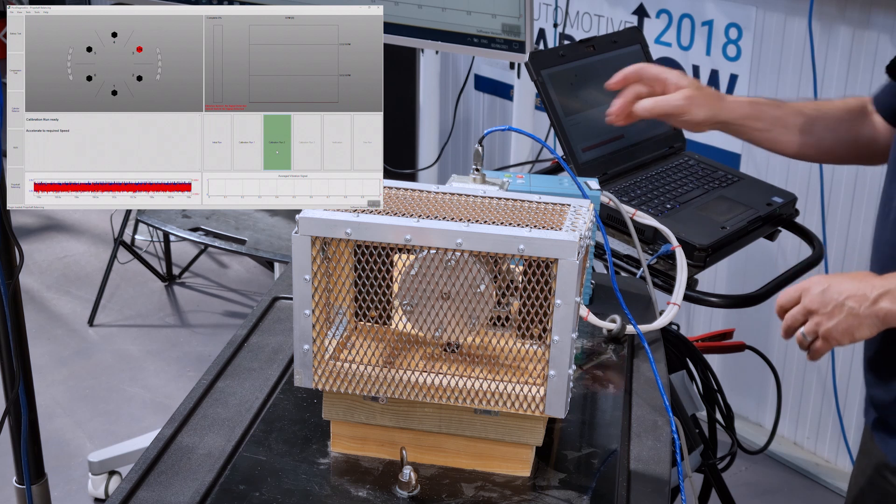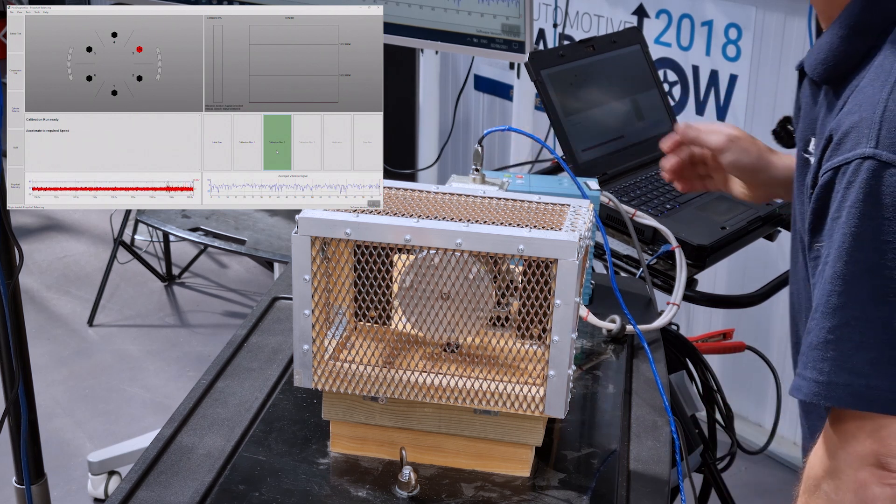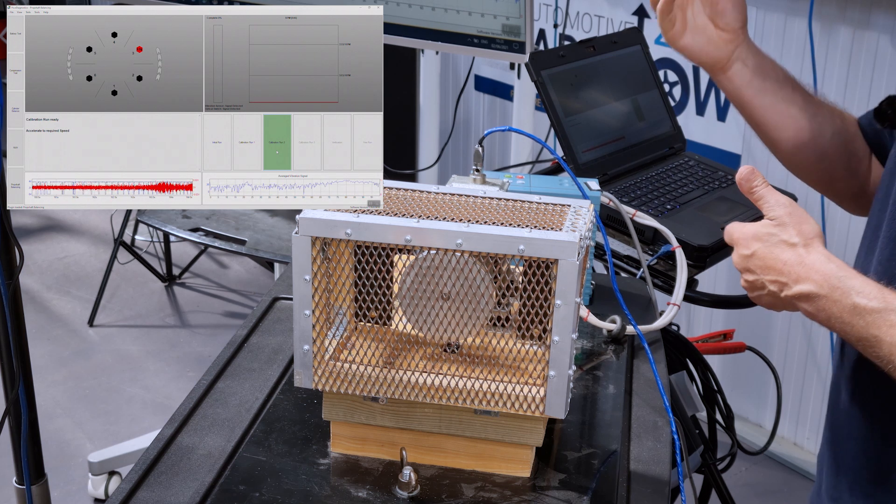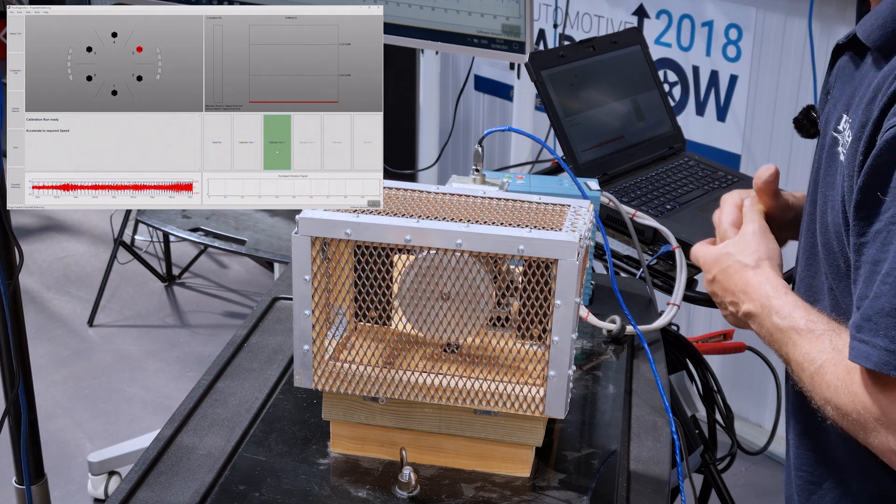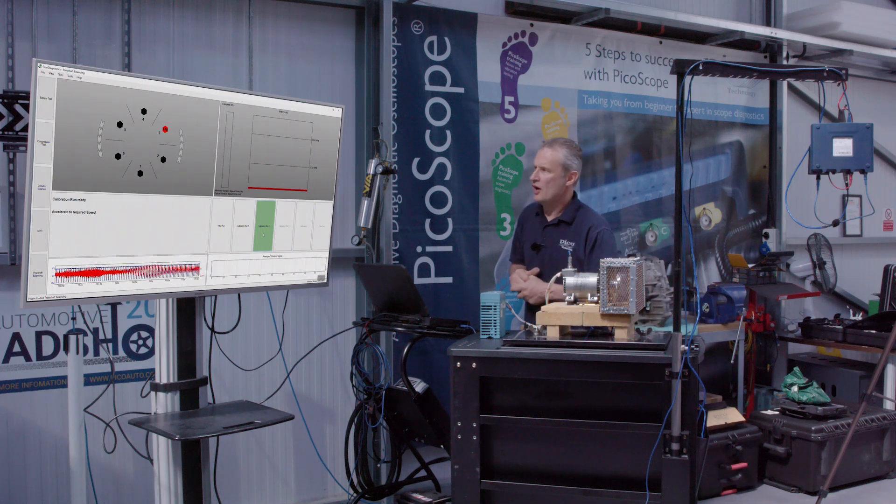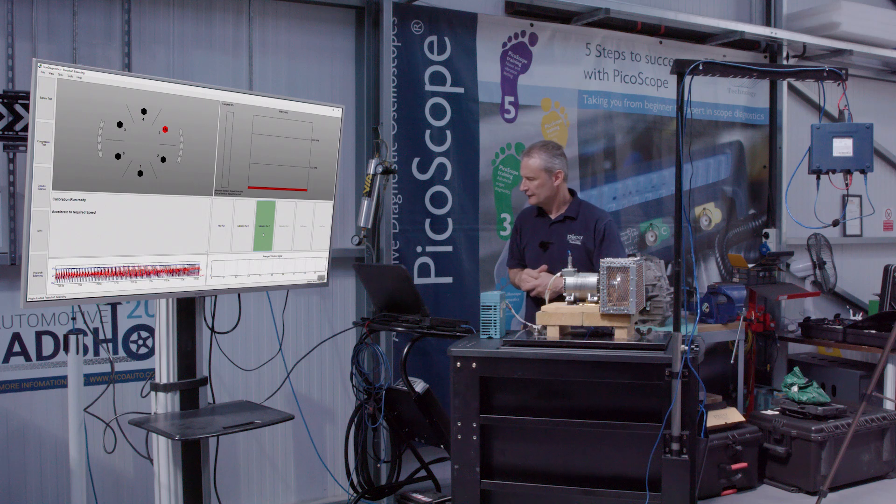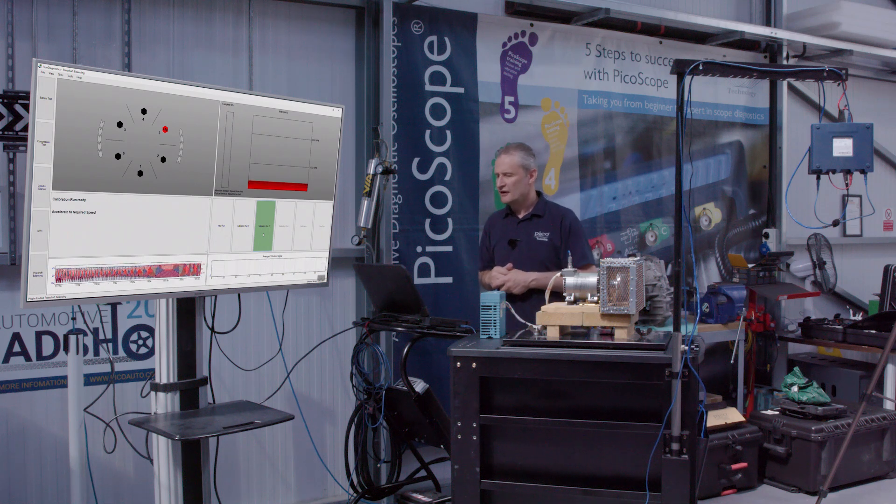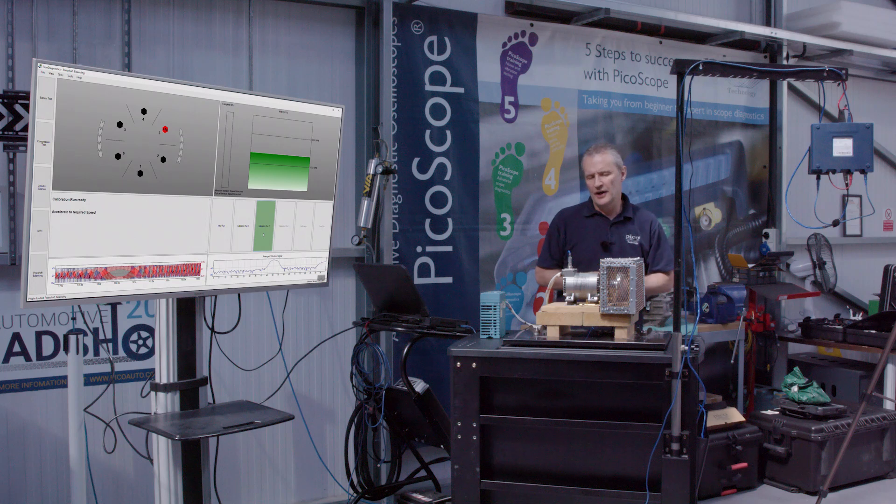So, now we do calibration run two. We followed the instructions of the software. And again, your colleague, whoever would be in the vehicle now driving at the right speed. The optimum speed, the shaft speed, which they're aiming for. Remember, 3232 RPM. I think already you can tell there's less vibration there. A little bit quieter from what it was previously where we had double the weight on one stud.